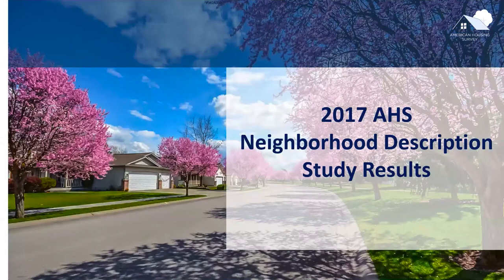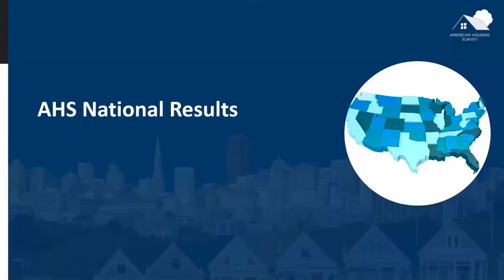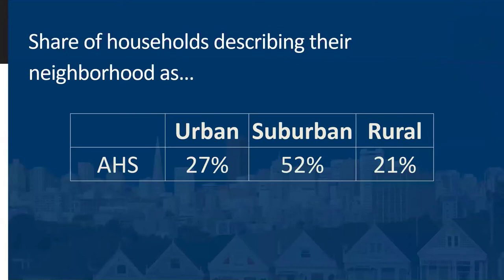Now that you have some background, let's look at some results from the 2017 American Housing Survey Neighborhood Description Study. According to the 2017 American Housing Survey, 27% of households described their neighborhood as urban, 52% described their neighborhood as suburban, and 21% described their neighborhood as rural. The 52% figure shows that more than half of American households described their neighborhood as suburban, confirming what many demographic and housing researchers have long believed — that half of Americans live in the suburbs.